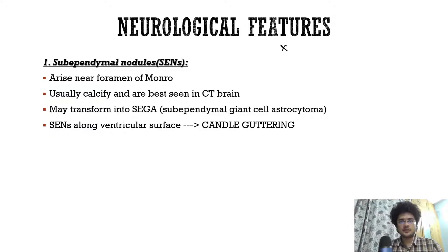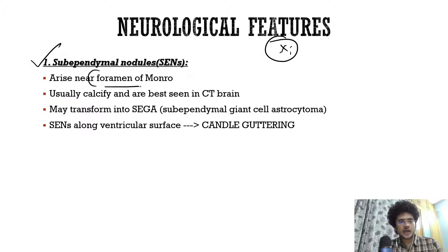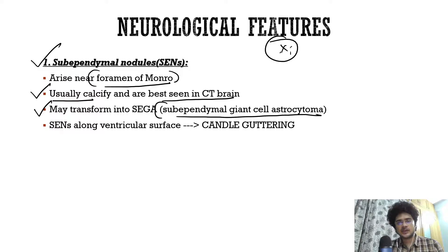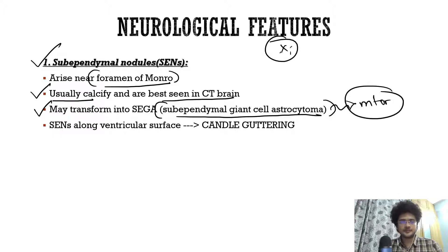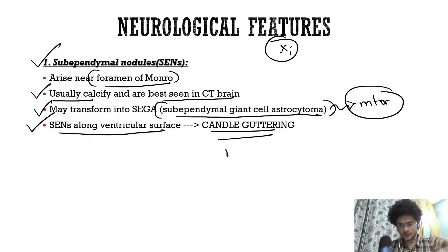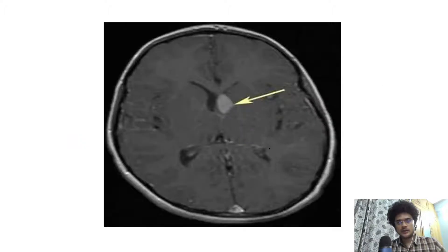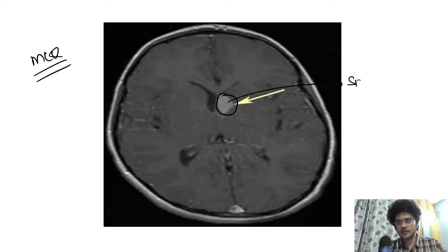For neurological features: sub-ependymal nodules usually appear near the foramen of Monro and have a high tendency to calcify, so they are best seen on CT brain. Some may transform into sub-ependymal giant cell astrocytomas, which respond to mTOR inhibitors. Multiple sub-ependymal nodules along the ventricular surface create a pattern called candle guttering — a very important picture MCQ.